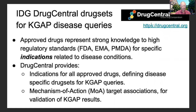The IDG resource Drug Central from UNM is a compendium of compiled and curated knowledge about drugs approved by leading regulatory agencies. Drugs are approved for specific indications — a clinical condition for which the drug has been proven effective and safe by clinical trials, according to strict standards of evidence. In addition, Drug Central includes compiled and curated drug-target relationships.